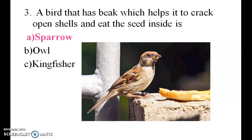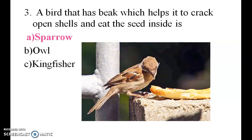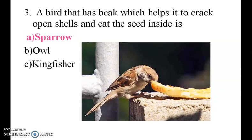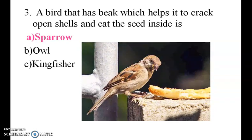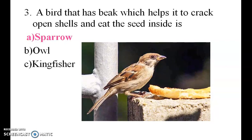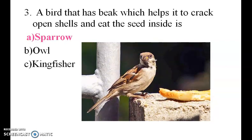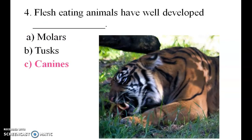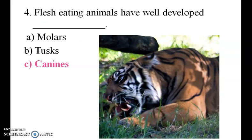A bird that has a beak which helps it to crack open shells and eat the seeds inside — it's a sparrow. Flesh-eating animals have well-developed carnassial teeth.